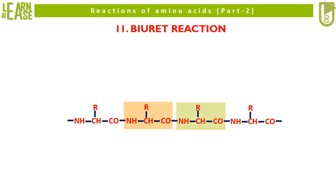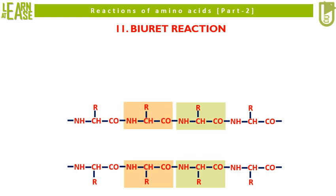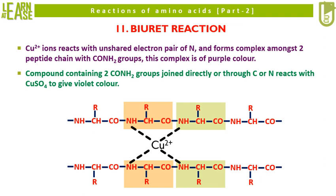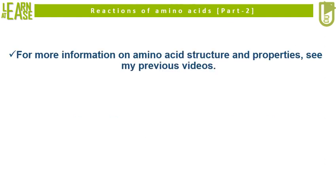Now I will explain the eleventh and last reaction, that is the biuret reaction. A small peptide made of four amino acids is shown. Peptides possess CO-NH linkages, which is a covalent bond between two adjacent amino acids in a peptide. This covalent bond occurring between carbon and nitrogen of CO-NH is called a peptide bond. In the biuret reaction, copper ions react with the unshared electron pair of nitrogen and form a complex amongst two peptide chains with CONH2 groups — this complex is purple colored. Briefly, in the biuret reaction, a compound containing two CONH2 groups joined directly or through carbon or nitrogen reacts with copper sulfate to give violet color. As the final product of biuret reaction is purple colored, this reaction is categorized as a color reaction of amino acid. With this I complete my set of videos on reactions of amino acids.